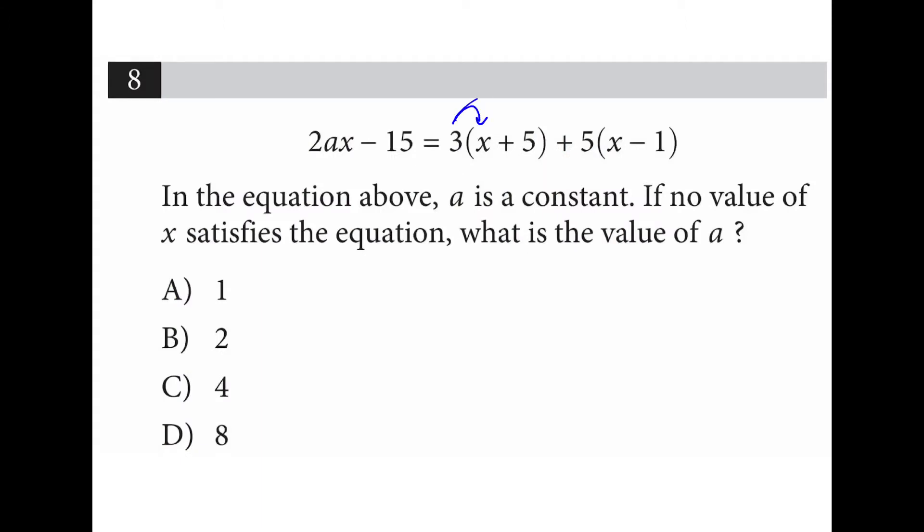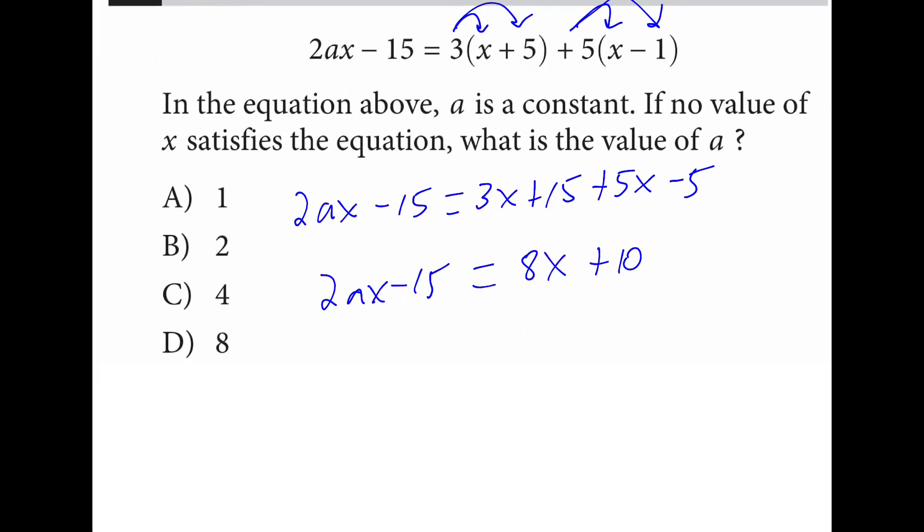First I'll distribute the three and the five. Then I'll combine like terms. And if I move all the x's to the right, the numbers to the left, I have negative 25 after subtracting 10 from both sides. And here I have eight minus two a multiplied by x.